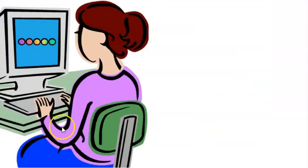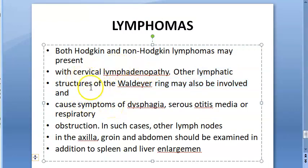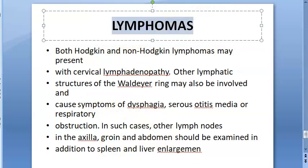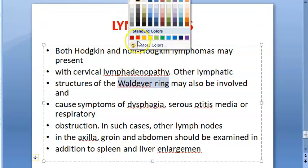In lymphomas such as Hodgkin lymphoma and non-Hodgkin lymphoma, there is cervical lymphadenopathy, and the lymphatic structures of Waldeyer's ring may also be involved. If these structures are affected, the patient can present with dysphagia, serous otitis media, or respiratory obstruction.